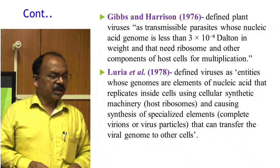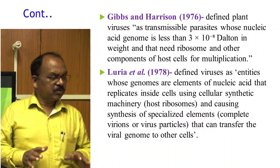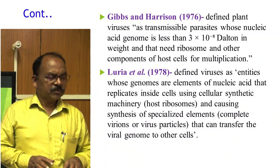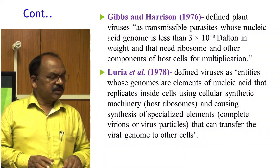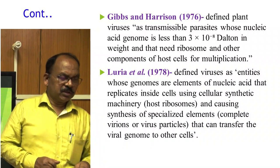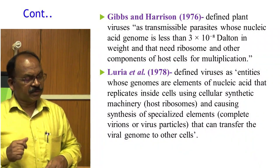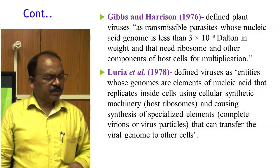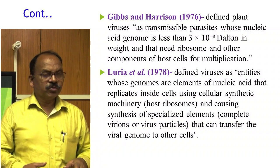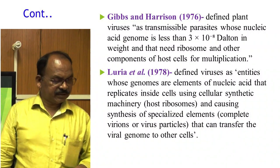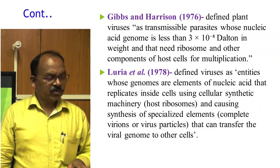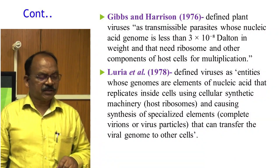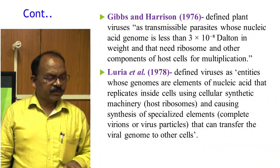Gips and Harrison in 1976 defined plant viruses as transmissible parasites whose nucleic acid genome is less than 3×10⁻⁸ Dalton in weight and that need ribosomes and other components of the host cell for their multiplication. Subsequently, Lough and Tornia in 1978 defined viruses as entities whose genomes are elements of nucleic acid that replicate inside cells using cellular synthetic machinery and host ribosomes, causing synthesis of specialized elements that can transfer the viral genome to other cells.